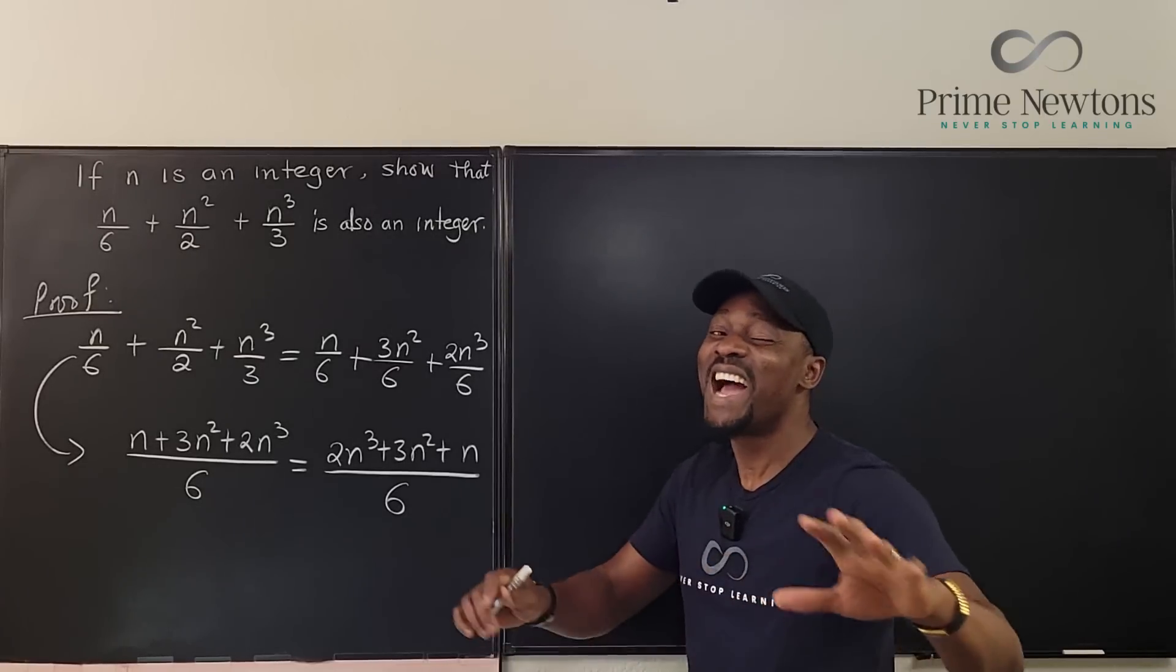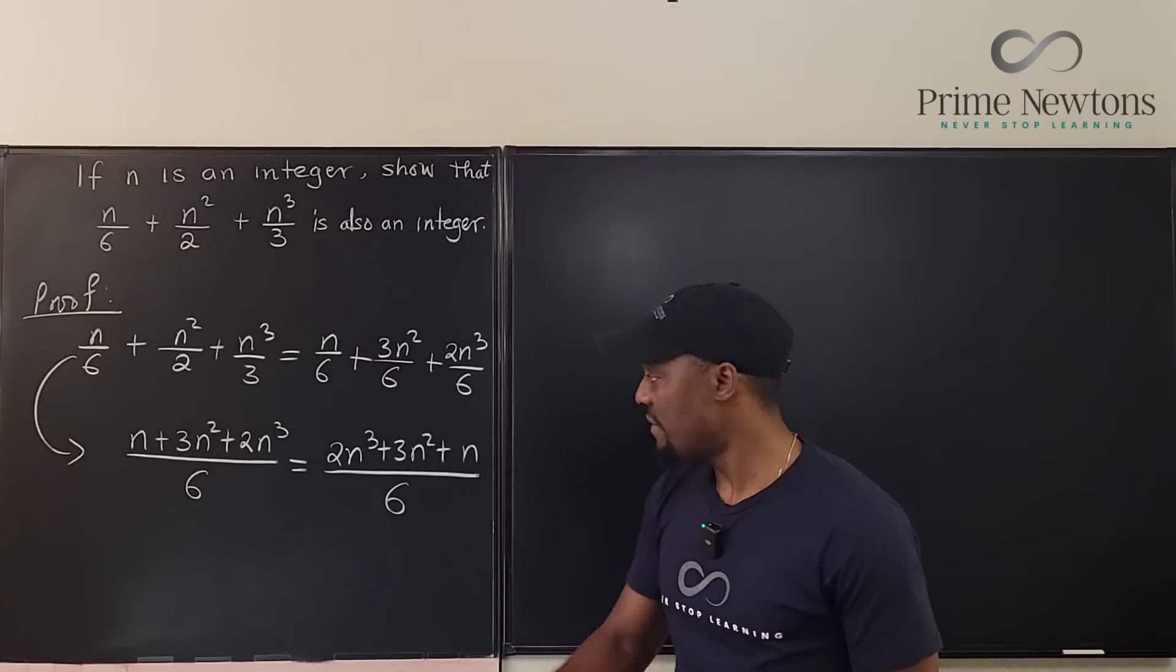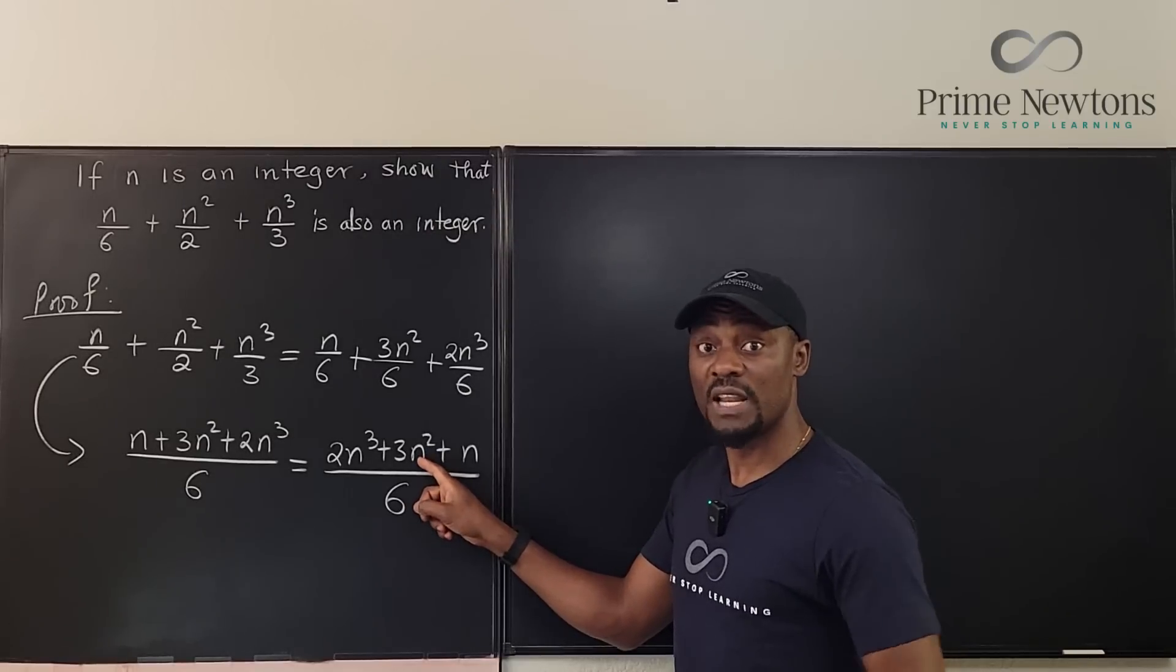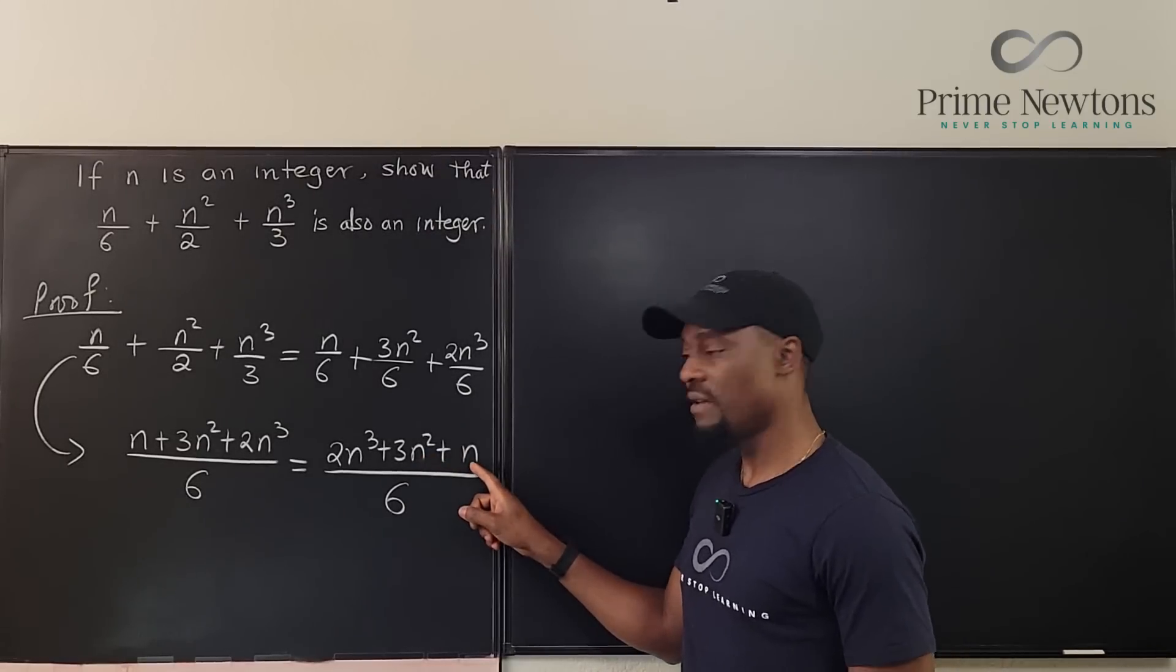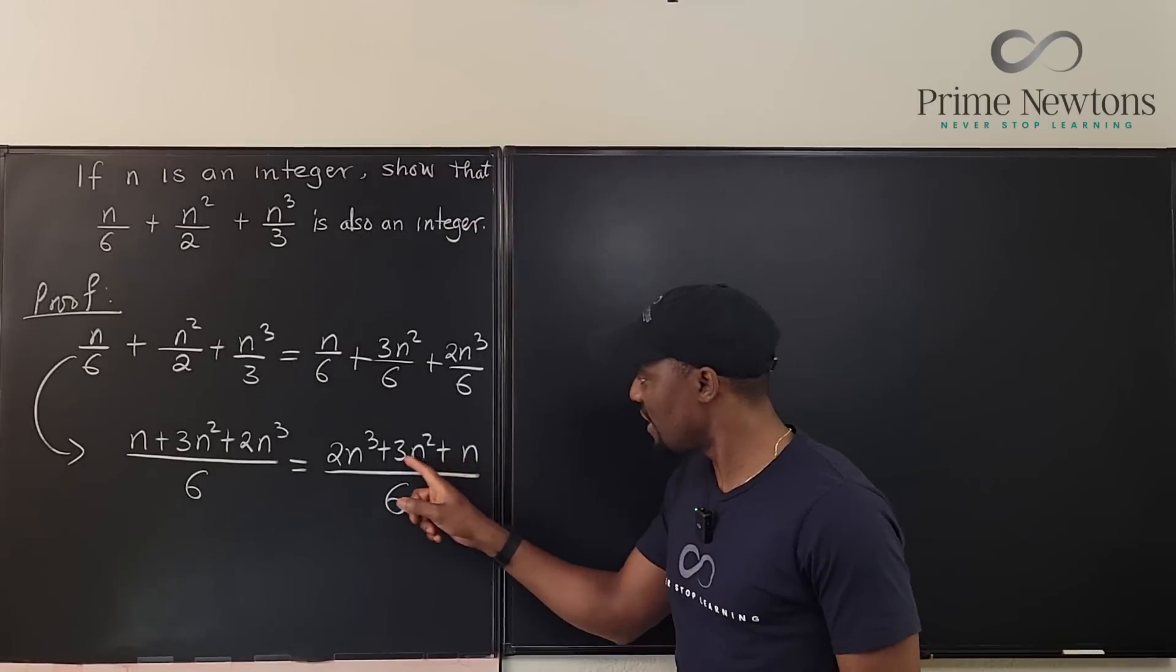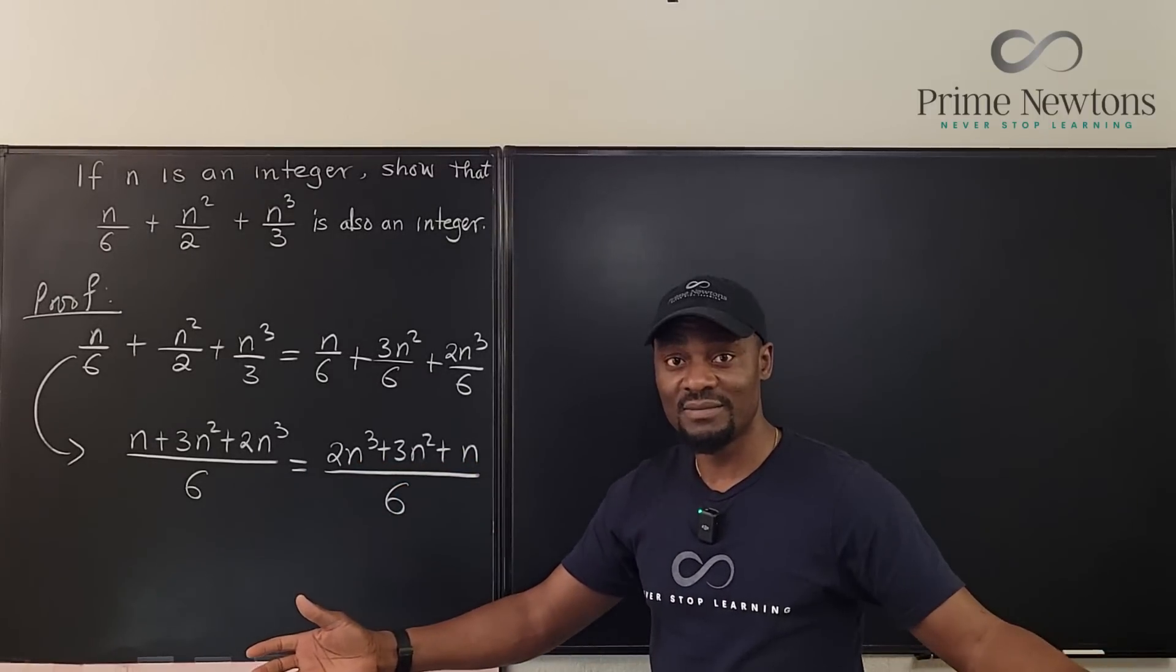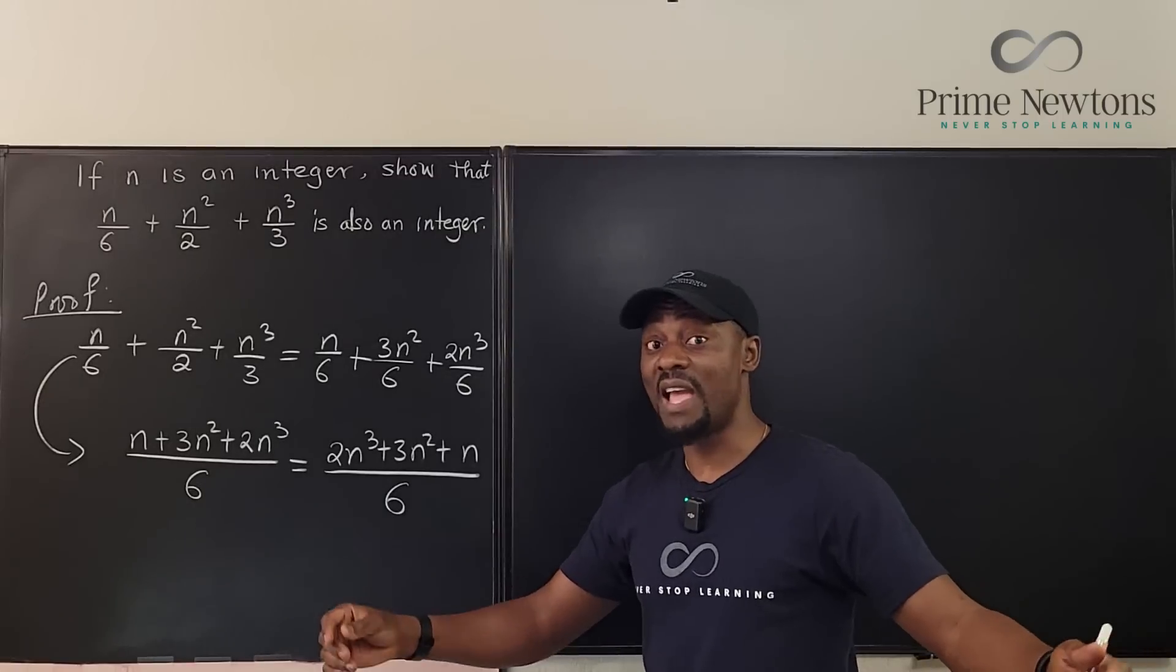I'm going to do the even thing. I have a nice way I always like to do that. If n is an even number, then this is even because the square of an even number is even, and this is even because the number is even. Everything here is even and the sum of all even numbers is even.